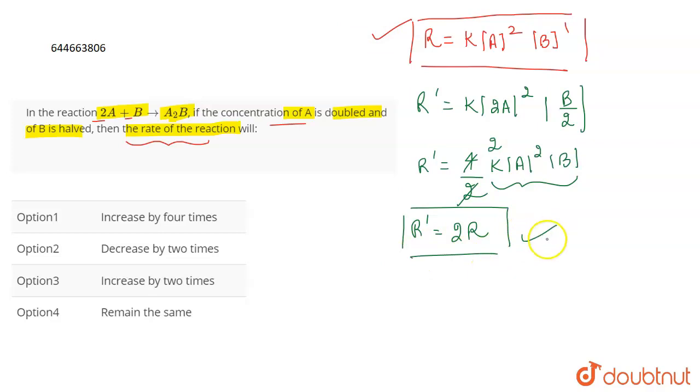So on doubling the concentration of A and halving the concentration of B, the rate of the reaction increases by 2 times. This is given to you in option number 3 and that's the correct answer for the question.